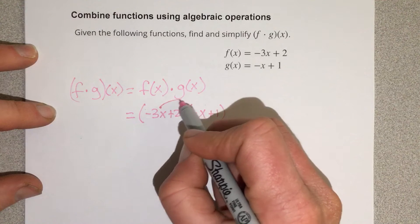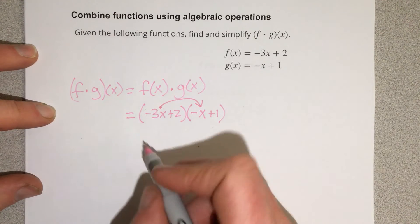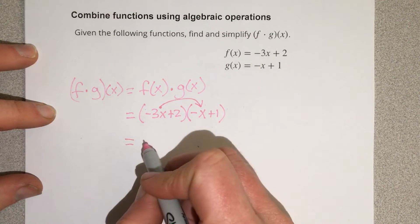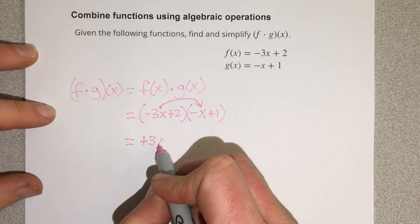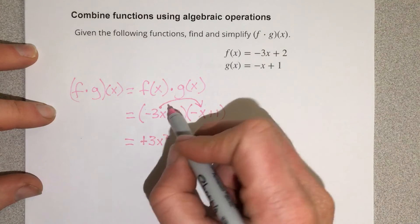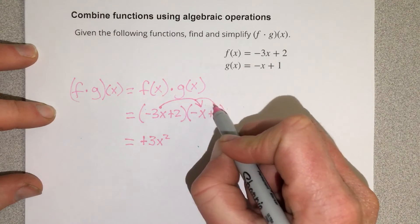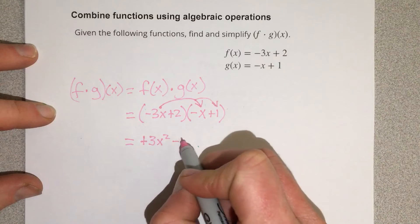So I'm going to take the negative 3x and I'm going to distribute it to the negative x, which is going to give you positive 3x squared. I'm going to take the negative 3x times the 1, so I get negative 3x.